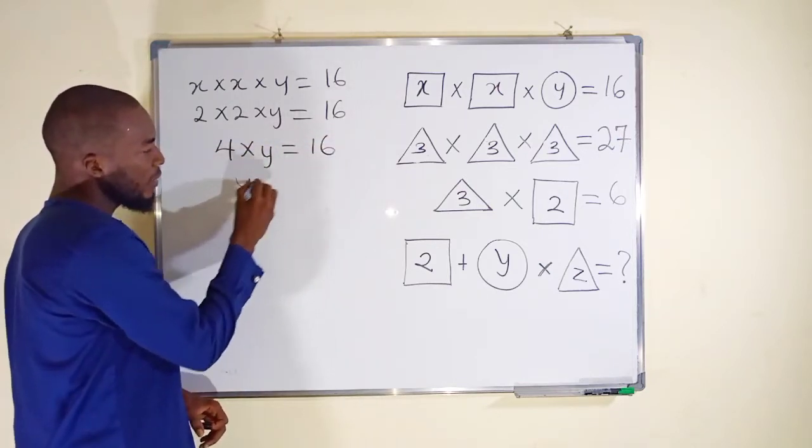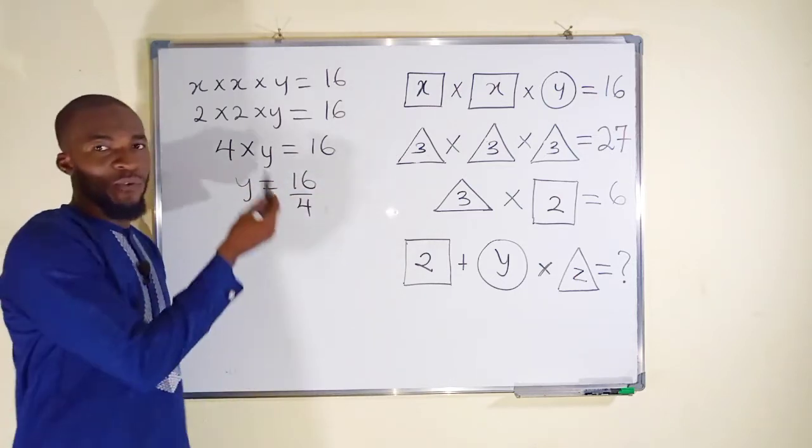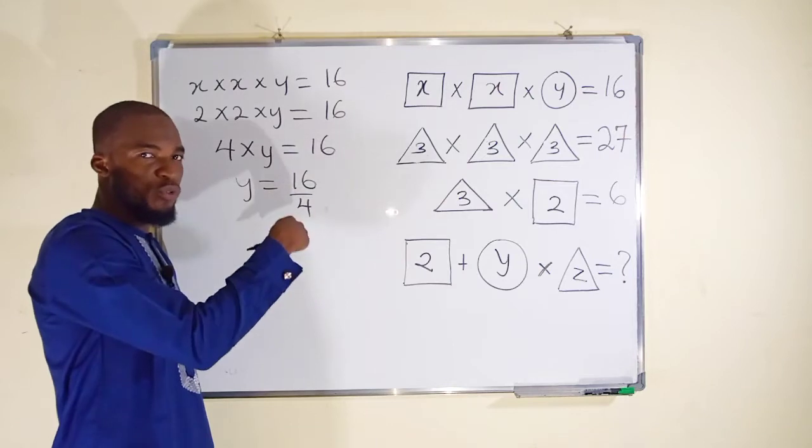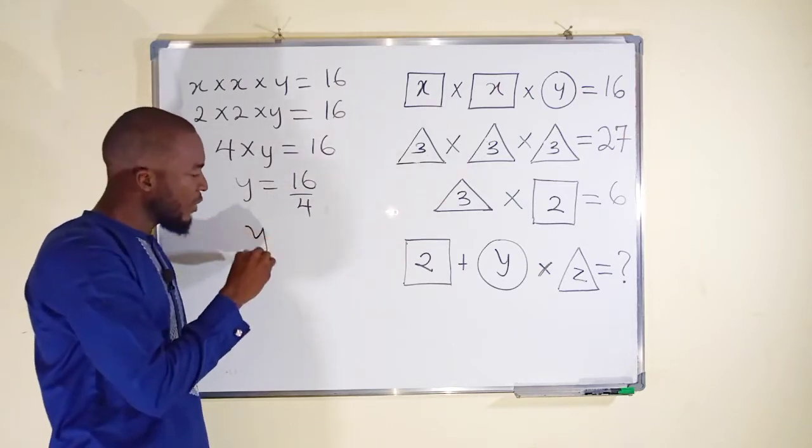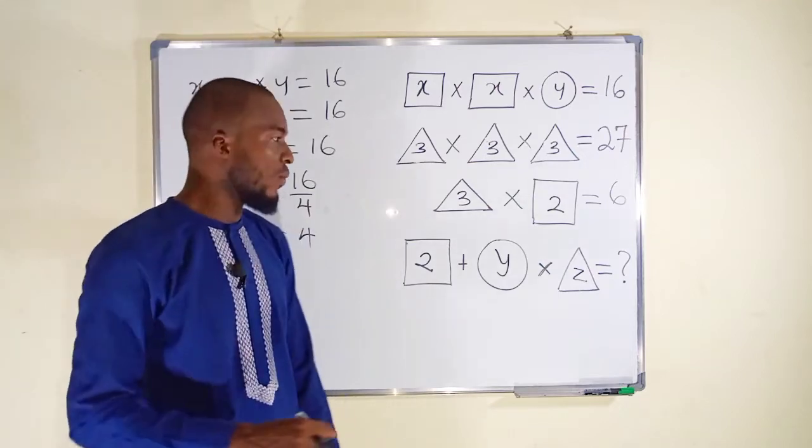Therefore y alone is equal to 16 divided by 4, because 4 is multiplying to the left, to the right it will divide, it will do the opposite. Finally y is equal to 4 because 16 divided by 4 is equal to 4.